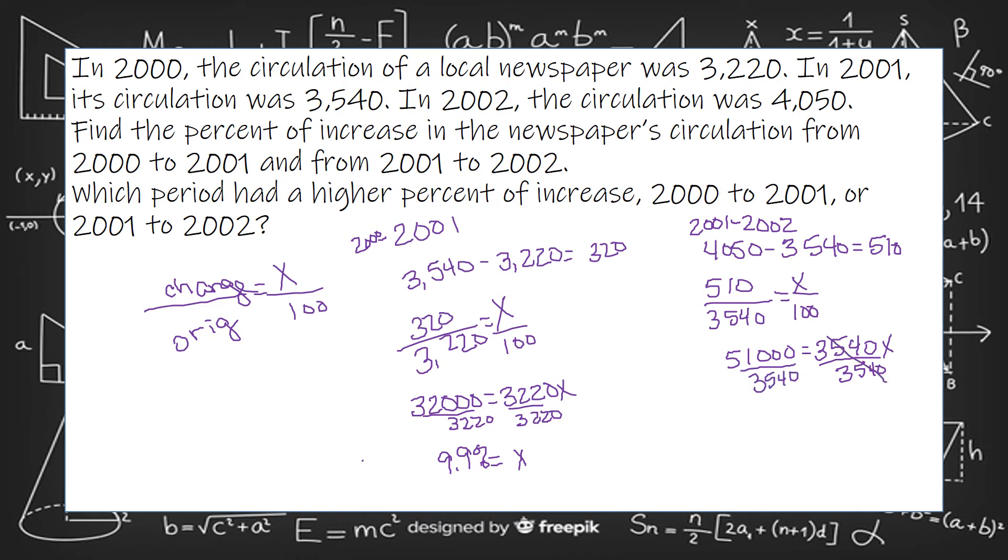So you're going to cross multiply. And then the 3,540 that's being multiplied by X, we need to undo that by dividing by 3,540.